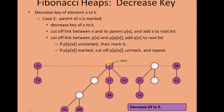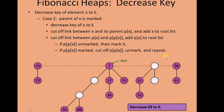Case 2: the parent of x is already marked. When the parent of x is marked and we decrease the key of x to another value k, we cut off the link between x and its parent and add x to the root list. Then we cut off the link between the parent and the grandparent of x and add the parent to the root list as well. If the grandparent is unmarked, we mark it. If the grandparent is already marked, we cut off the grandparent, unmark it, and repeat the process.